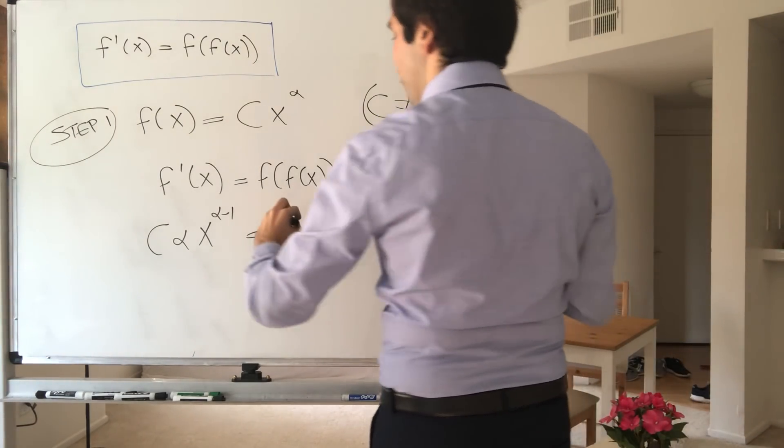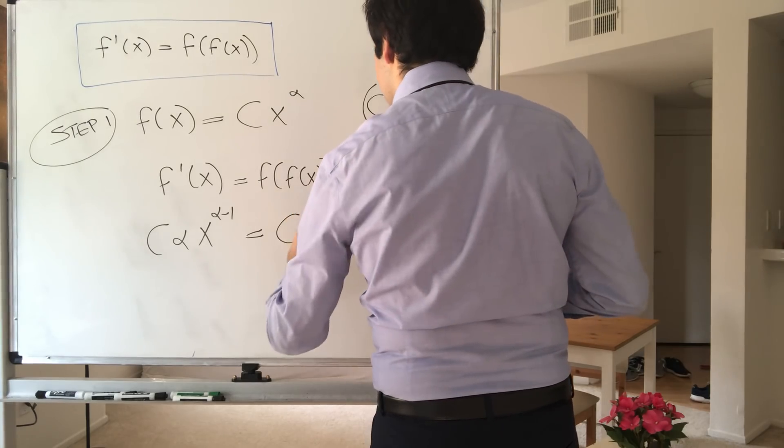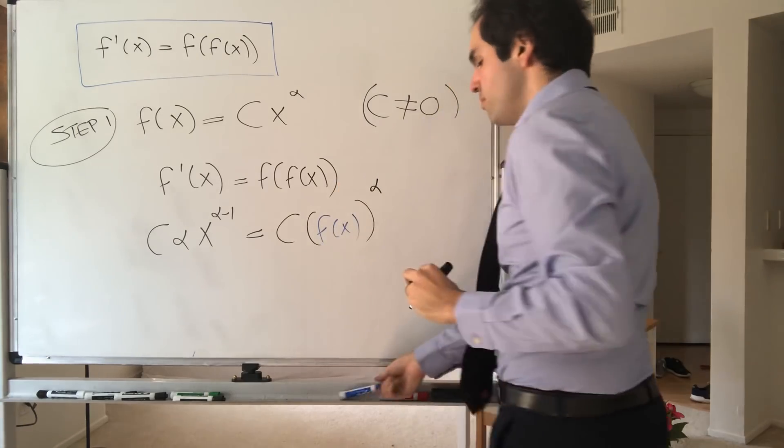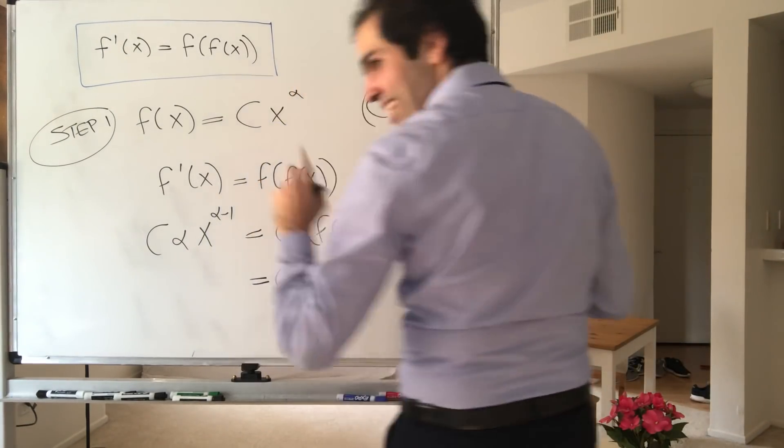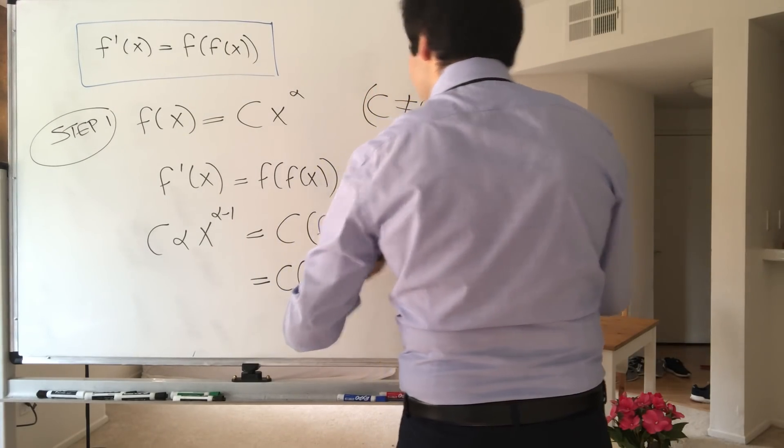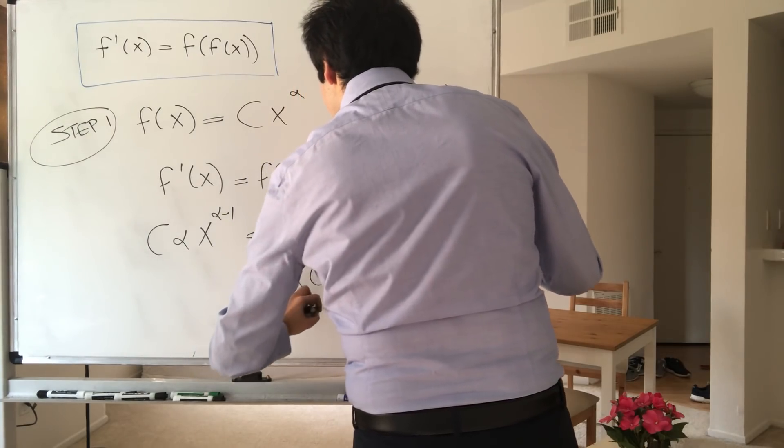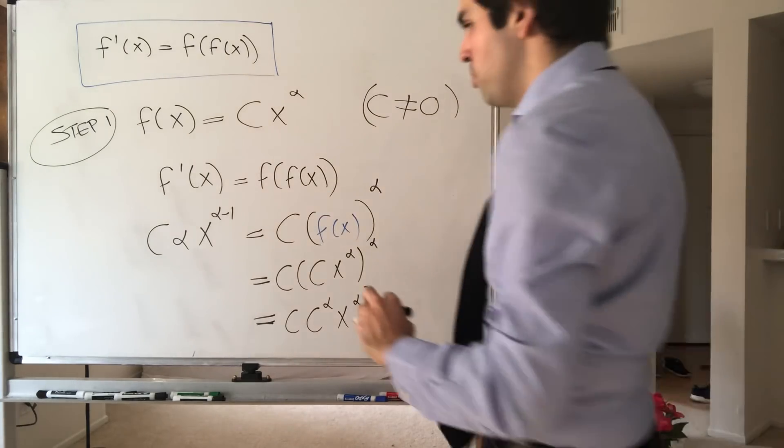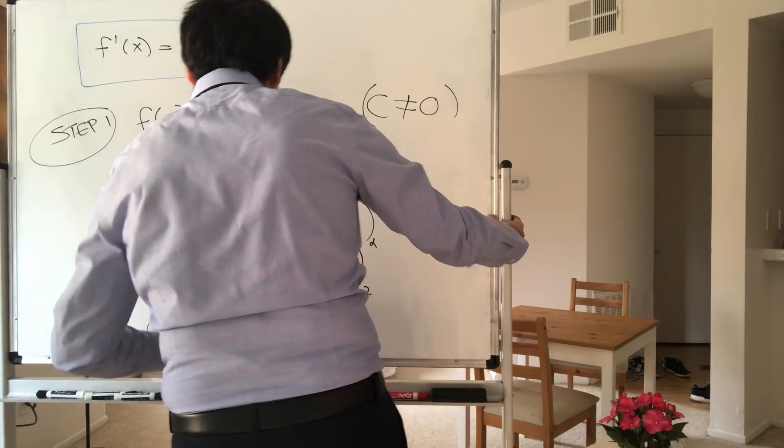And f of f, that is just c of f of x to the alpha power. And that is just c times c to the alpha times x to the alpha squared. And that equals c alpha x to the alpha minus 1.